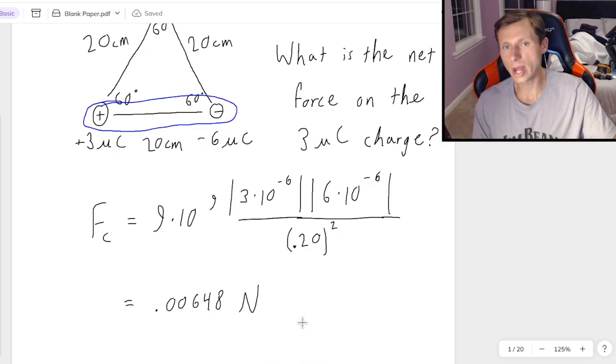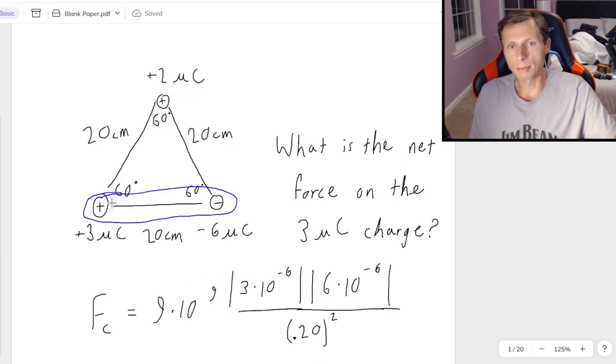And then for the direction, this is the hard part. Remember, we're talking about the positive and the negative charge. Opposite charges attract. So the two charges will want to head towards each other. I'm completely ignoring the top charge for this. I'm just focusing on this charge and this charge. Since they want to go towards each other, and since I'm only focusing on the 3 microcoulomb charge, the direction is to the right.